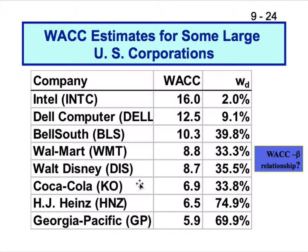Beta is the covariance between the security and the market divided by the standard deviation of the security and the market — no fundamental factors get in. WACC, however, is heavily into fundamental valuation, so it may be a richer measure. We could have a security prediction process where instead of beta, we use WACC.